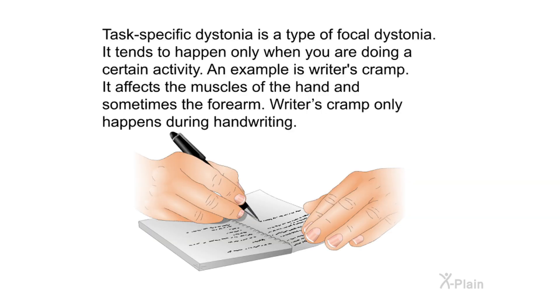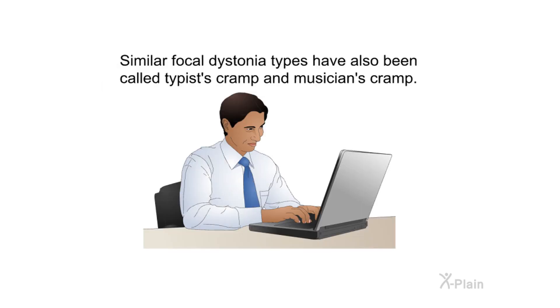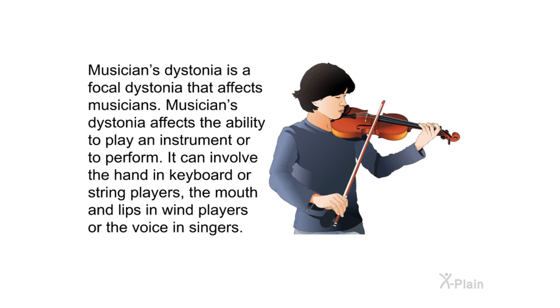Task-specific dystonia is a type of focal dystonia that tends to happen only when doing a certain activity. An example is writer's cramp, which affects the muscles of the hand and sometimes the forearm, occurring only during handwriting. Similar types include typist's cramp and musician's cramp. Musician's dystonia is a focal dystonia that affects musicians' ability to play an instrument or perform, and can involve the hand, mouth and lips, or the voice.